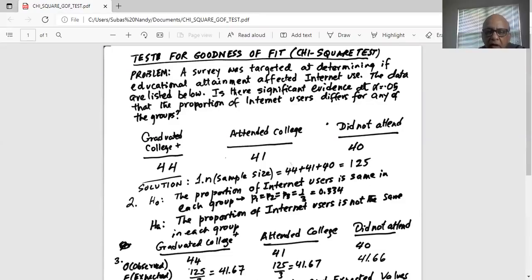Now we have three categories: graduated college plus, attended college, and did not attend college. So observed under graduated college plus category is 44. Attended college category, second category observed count is 41. And did not attend category, did not attend college category observed count is 40.